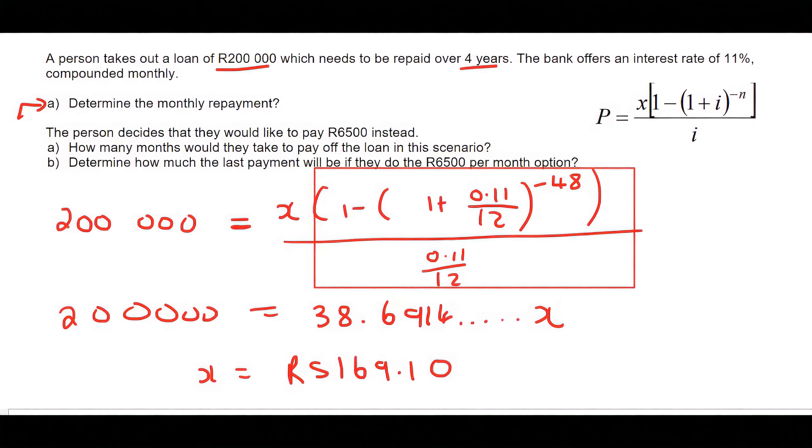What this means is if this person would like to have a 200,000 Rand loan over a 4-year period, then they must spend 5169.10 every single month. If they do that, their loan will be paid off in exactly four years.